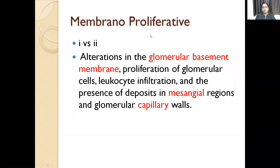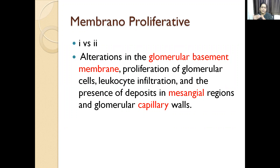Membranoproliferative glomerulonephritis has two types: type 1 and type 2 (dense deposit disease). It happens because there is alteration in the glomerular basement membrane with proliferation of glomerular cells, leukocyte infiltration, and presence of deposits in mesangial and glomerular capillary walls. Membranoproliferative is otherwise called mesangiocapillary — something is getting deposited in the mesangial and capillary, causing proliferation of glomerular cells, leukocyte infiltration, and alteration in the glomerular basement membrane.